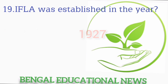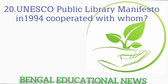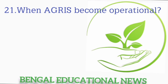Next question: in which year was IFLA established? The answer is 1927. Next question: the UNESCO Public Library Manifesto in 1994 cooperated with whom? The answer is IFLA. Next question: when did AGRIS become operational? The answer is 1975.